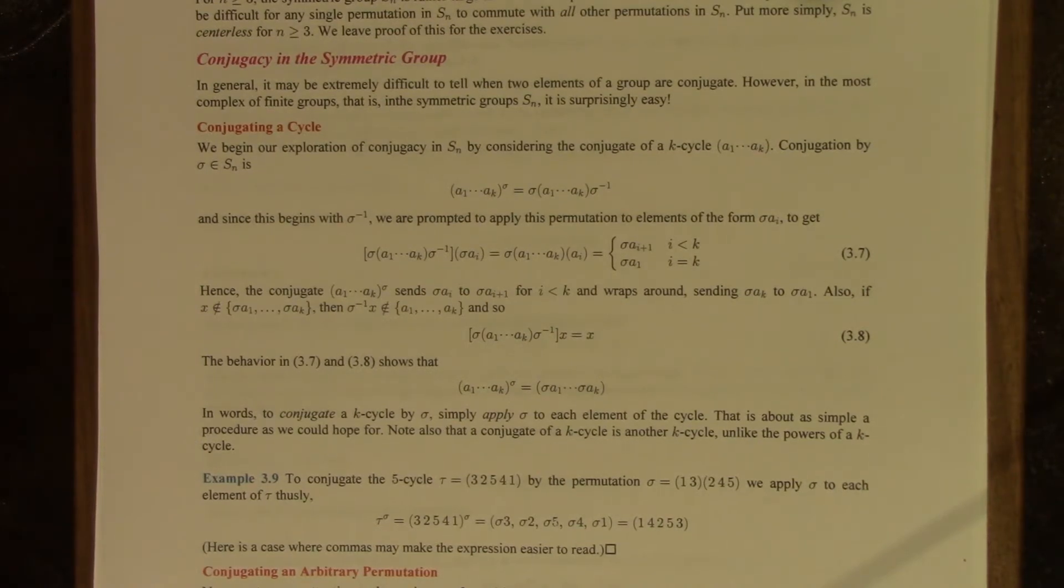In general, for arbitrary groups, it can be very difficult to tell when two elements are conjugate. As an example of that, if you studied linear algebra, you're familiar with similarity of matrices.